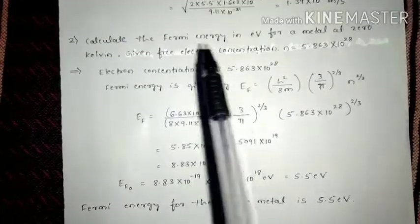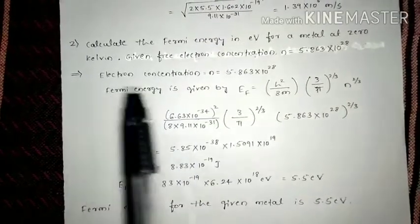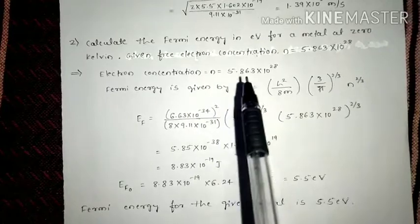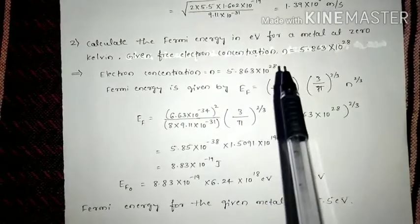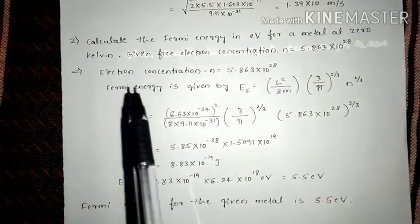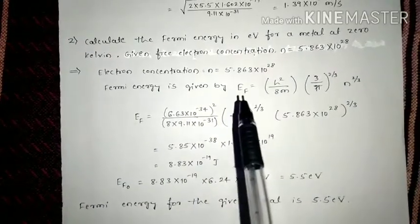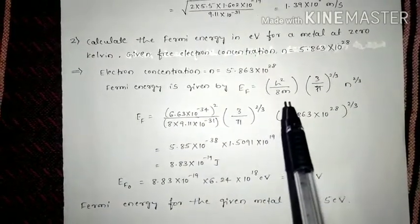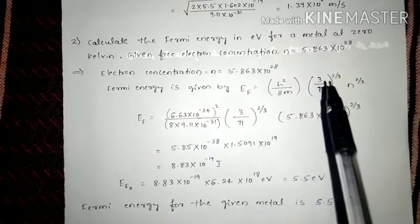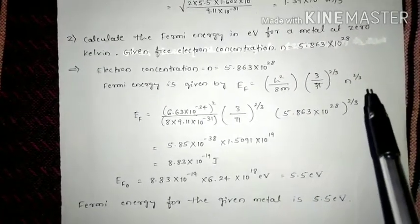He has given the electron concentration N = 5.863 × 10²⁸ and asked us to calculate the Fermi energy. The Fermi energy is given by: EF = (h² / 8m) · (3/π)^(2/3) · n^(2/3).